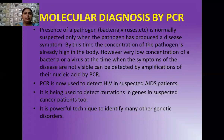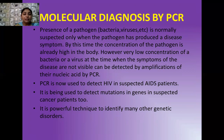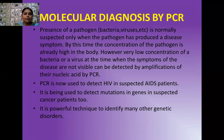The polymerase chain reaction (PCR) technique: the presence of a pathogen — which may be bacteria, virus, etc. — is usually suspected only when the pathogen has produced a disease, by which time the concentration of that pathogen is already very high in the body. However, very low concentrations of bacteria or virus, at a time when symptoms of the disease are not visible, can be easily detected with the help of PCR, which performs amplification of nucleic acids.